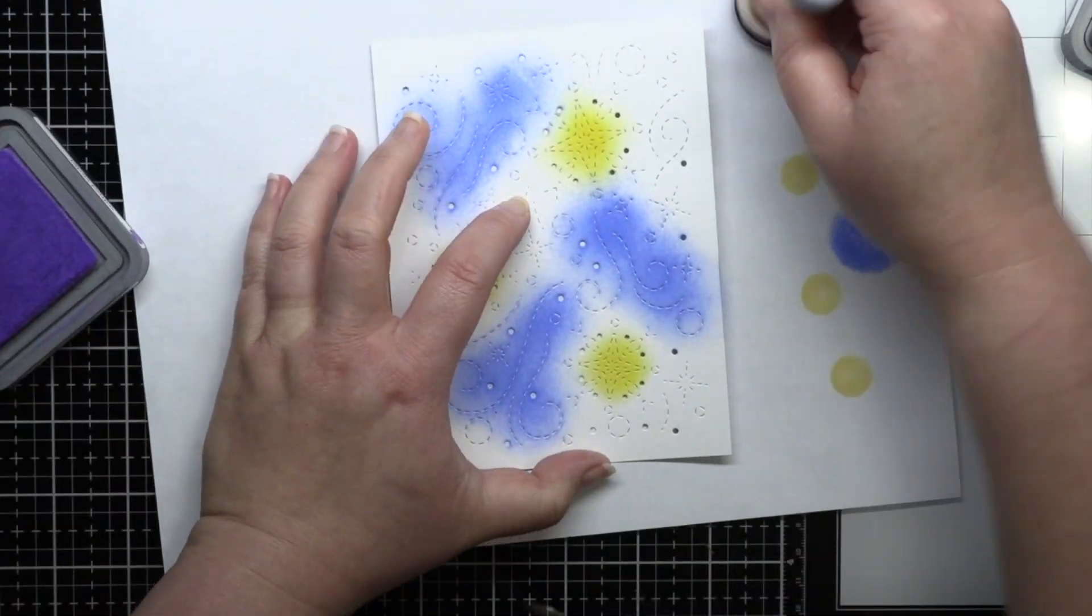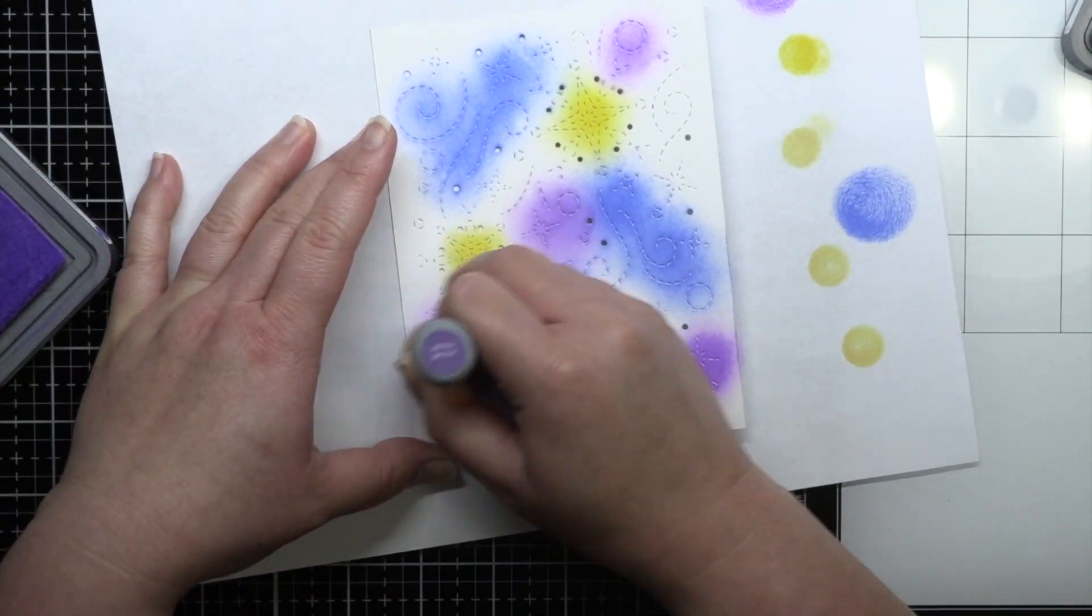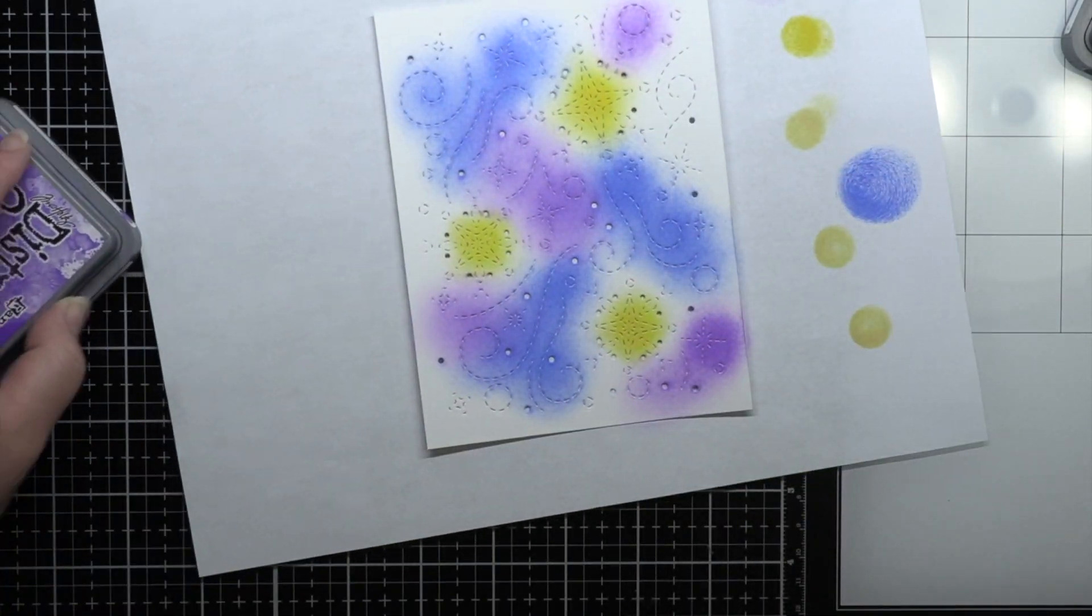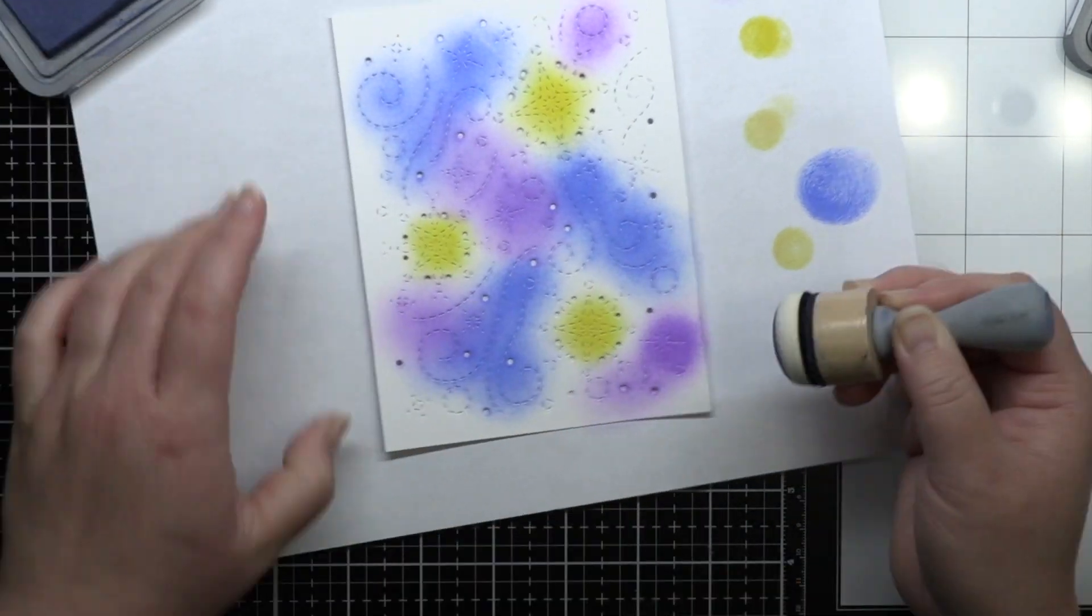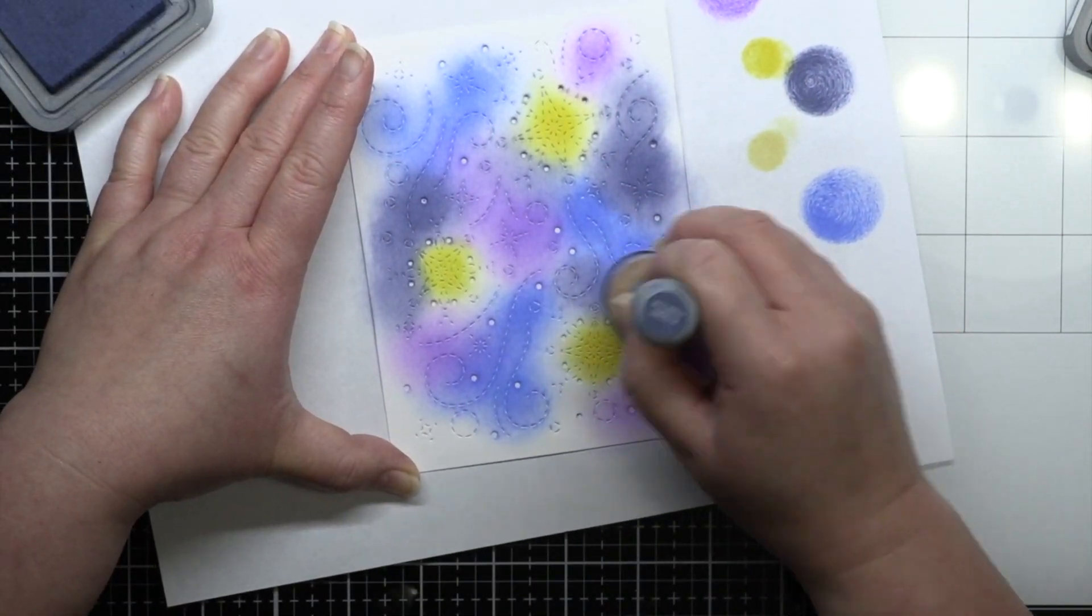Then I use blending tools to add patches of blueprint sketch, wilted violet, chip sapphire, and black soot distress oxide ink across the panel. I kind of followed the designs in the cover plate die with my inks, but not too strictly, and you could add color however you choose.